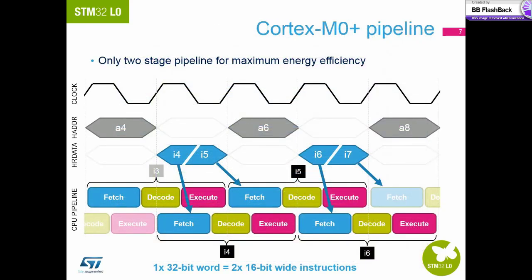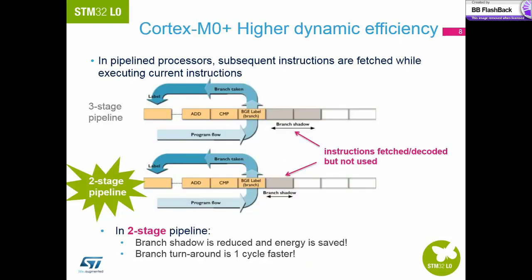The two stage pipeline on the STM32L0 has been selected to maximize the energy efficiency of the whole device and maintain a steady flow of instructions into the CPU. Comparing the two stage pipeline to a three stage pipeline, when a branch occurs on the three stage pipeline, energy has already been used fetching and decoding the next two instructions that will never be used by the core at this time. Whereas on the two stage pipeline, this is reduced by 50%.